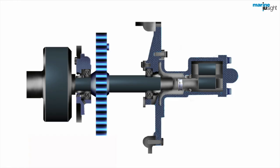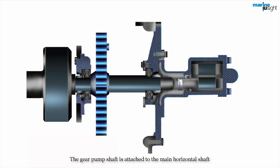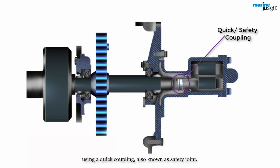The gear pump shaft is attached to the main horizontal shaft using a quick coupling, also known as safety joint. This coupling will break in the event of a stuck gear pump, thus avoiding overloading in the main shaft and the motor, preventing significant damage.